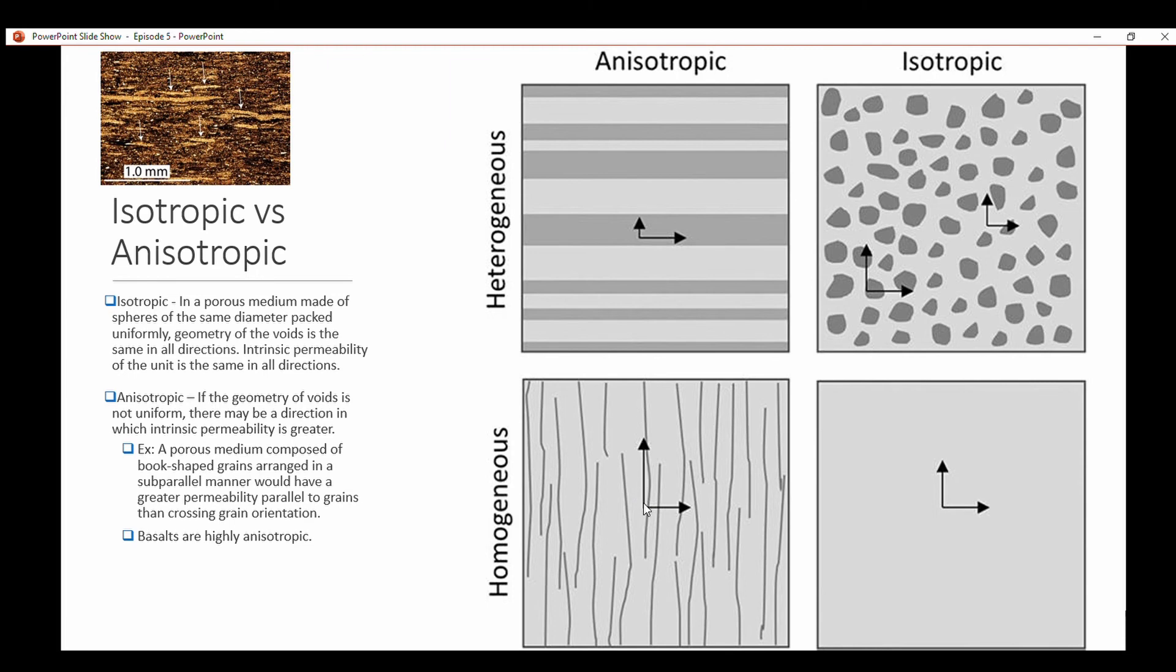This is a good chart to show. If it's anisotropic and homogeneous, these vectors represent the magnitude of how well water would be traveling through this particular material. In this case, let's say a shale, water flow would be better in the horizontal direction than in the vertical direction. If it's isotropic and homogeneous, they would be equal in all directions, very rare.